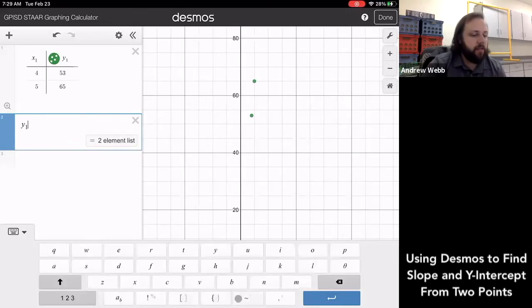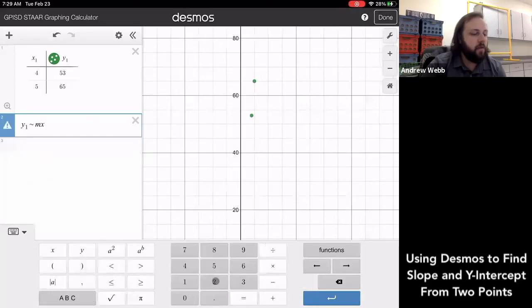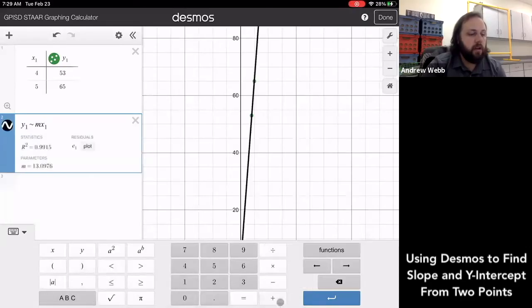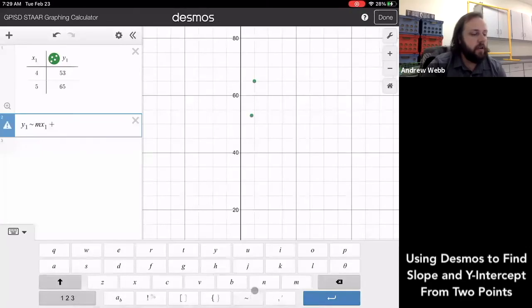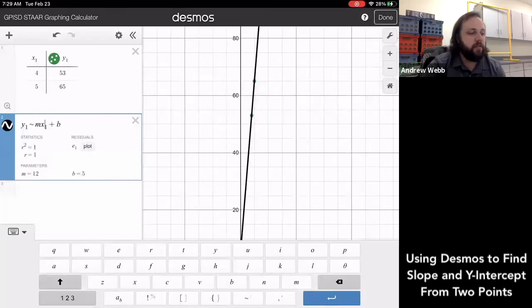And then I'm going to use the tilde symbol here. M X one plus B. So we see that it's very similar to, like I said, our slope intercept form, which is Y equals M X plus B.